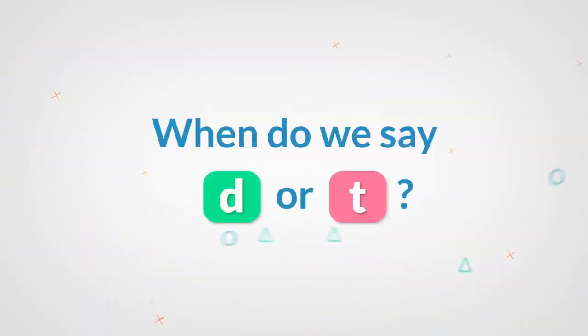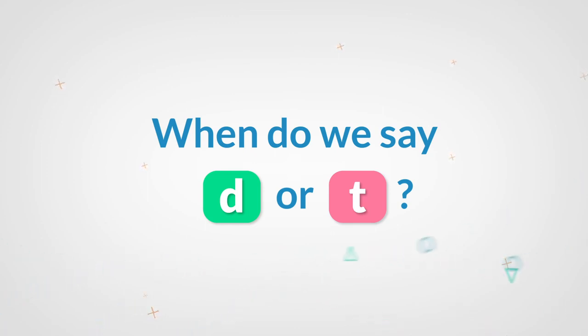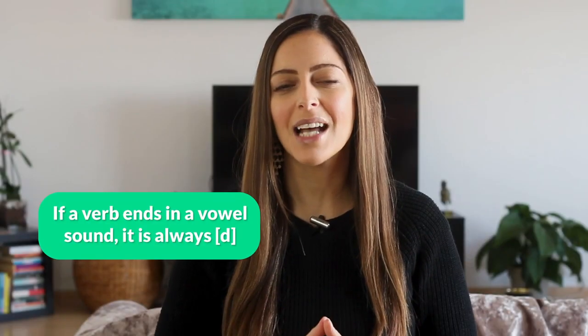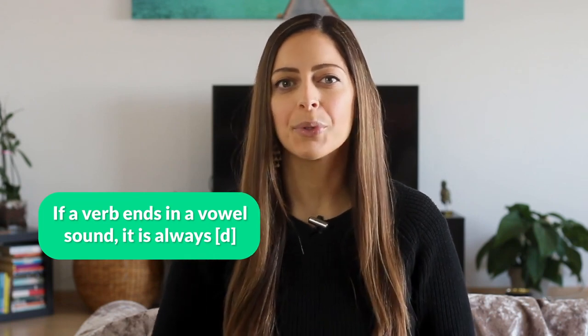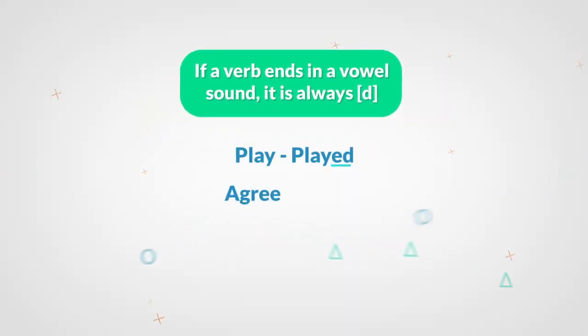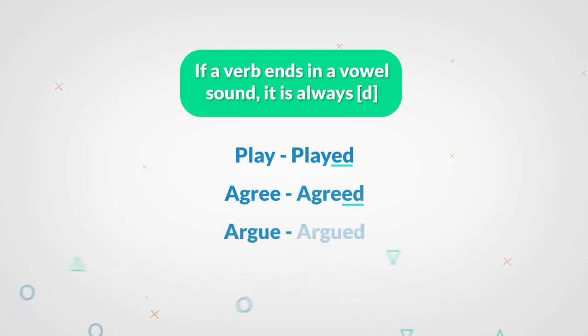The distinction between when to pronounce the ED suffix as T or D is just a little bit trickier. When do we say D or T? Let's start with an easy fact to remember: if a verb ends in a vowel sound, it is always D. For example: played, agreed, argued, cried.